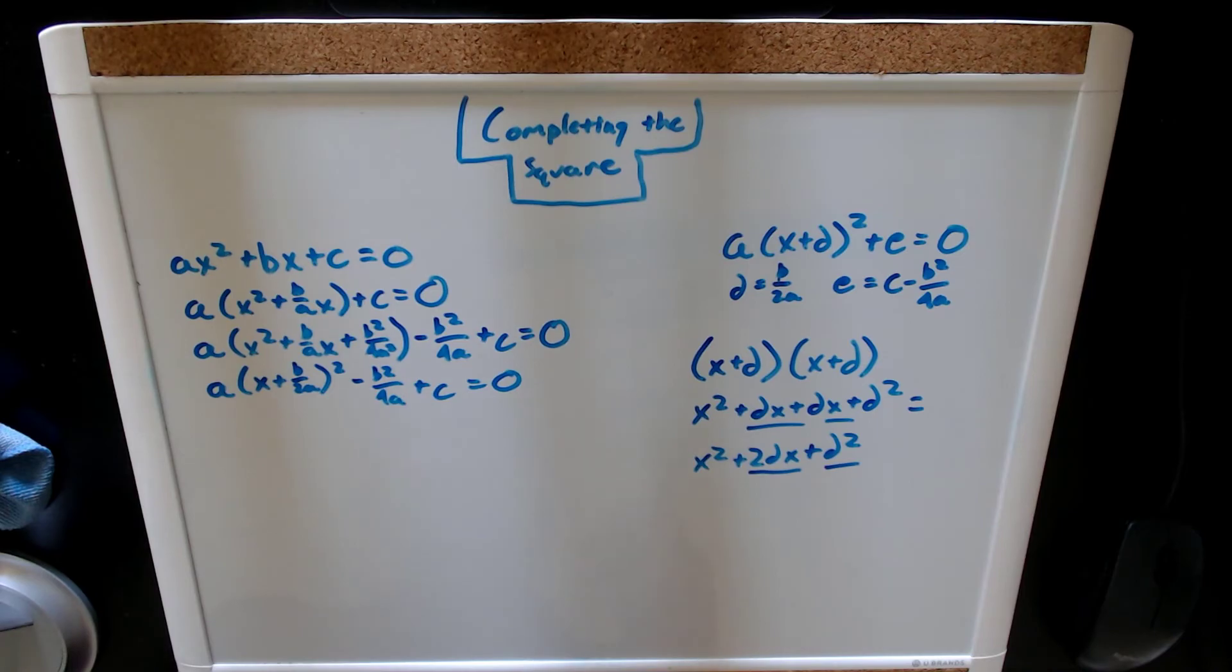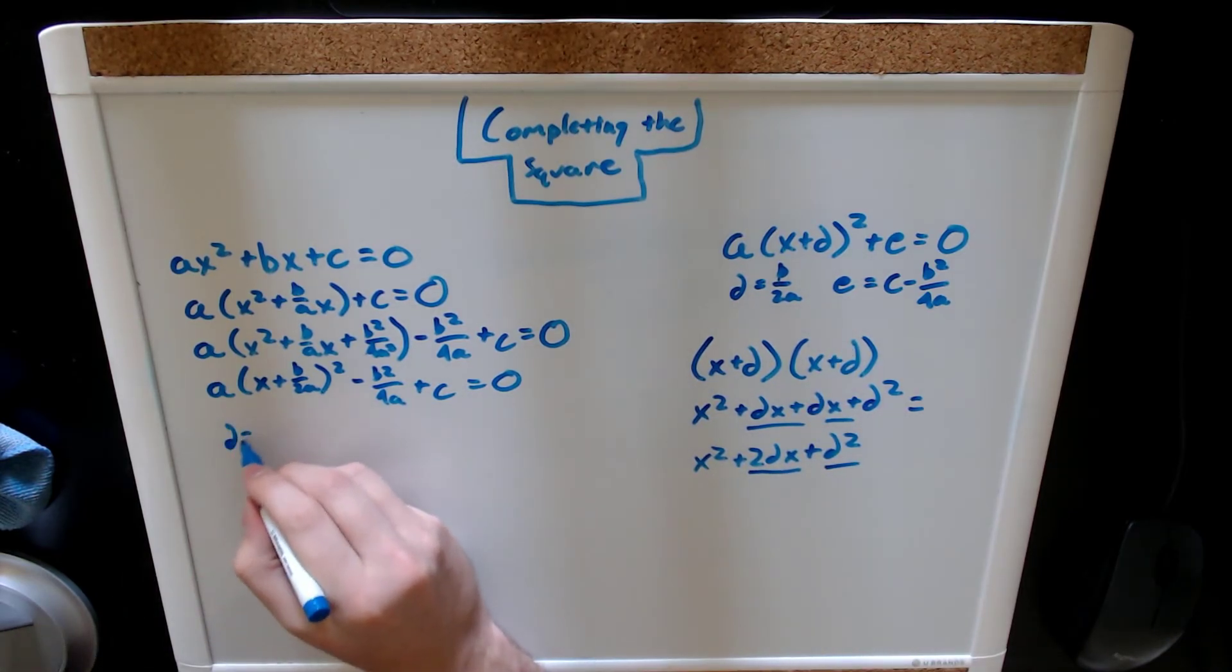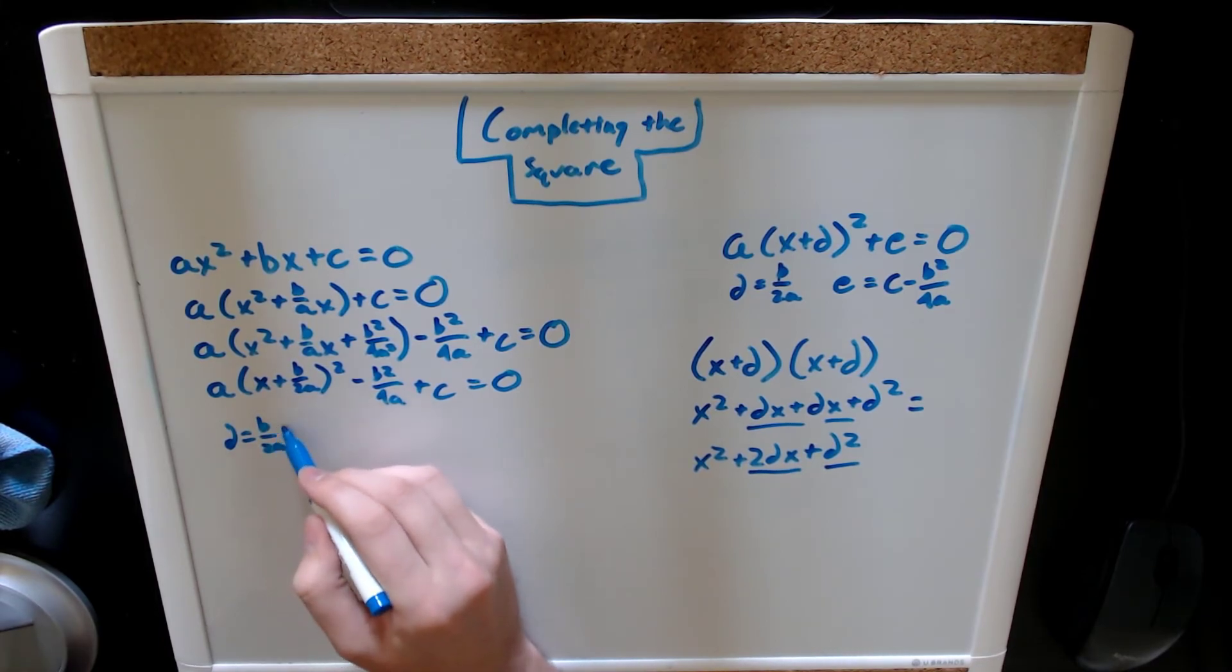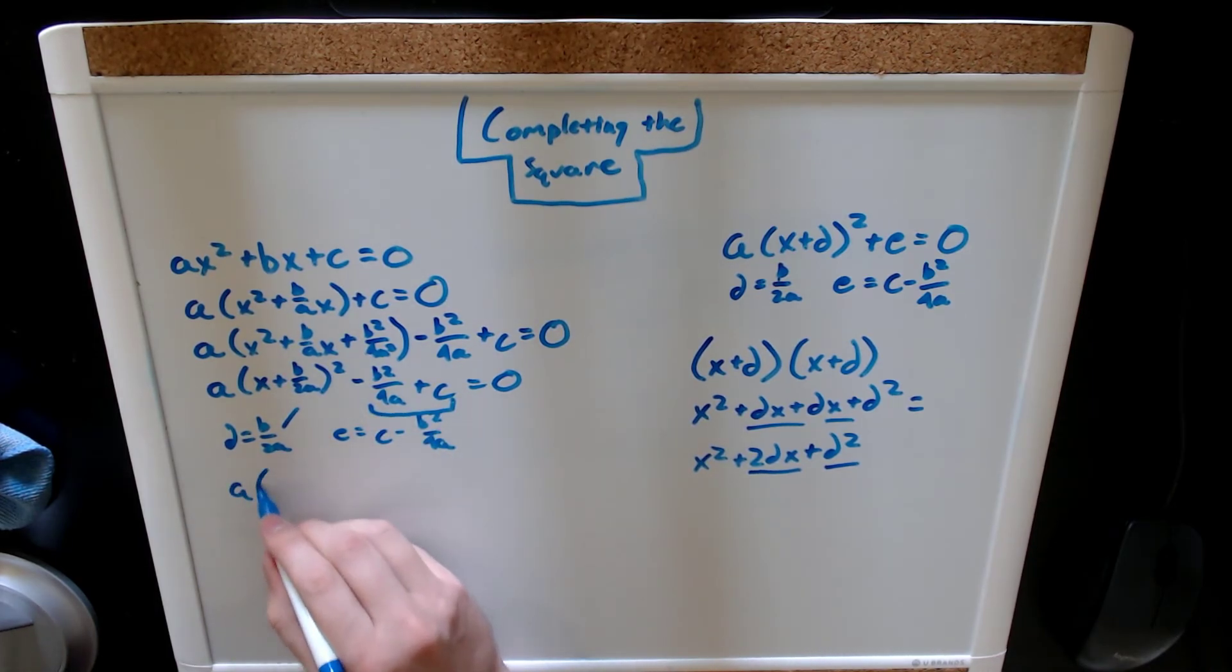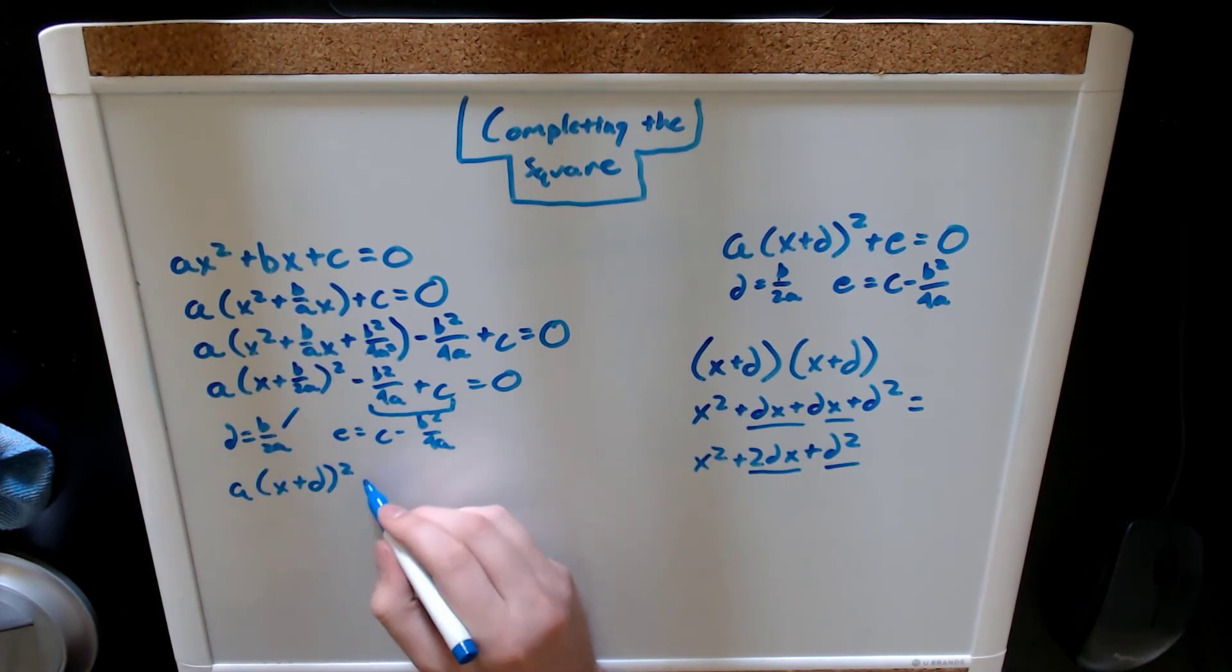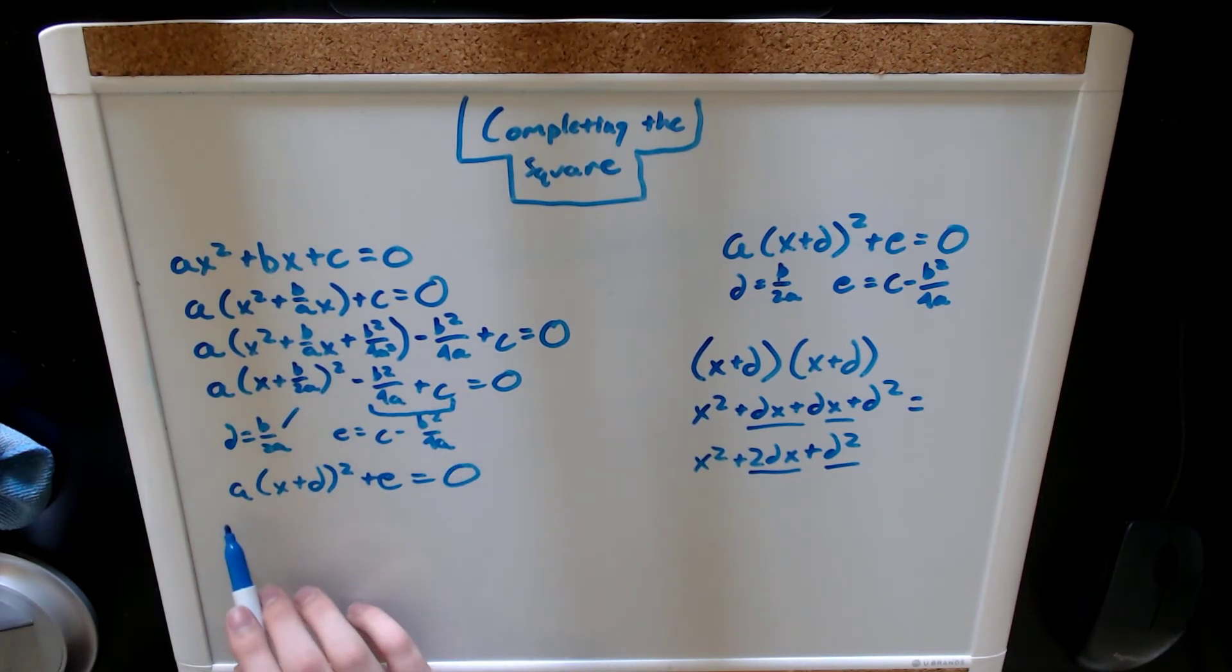Now, if we start doing the substitutions that we have on this side, we can set d equal to b over 2a, which is that term right there, and e equal to c minus b squared over 4a, which is that right there. So, we can write it as a, times x plus d squared plus e equals zero. And that's how that works.